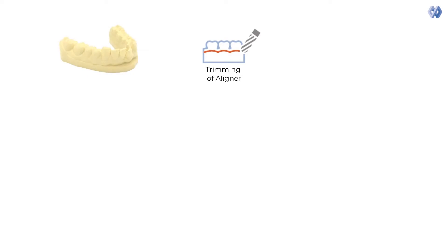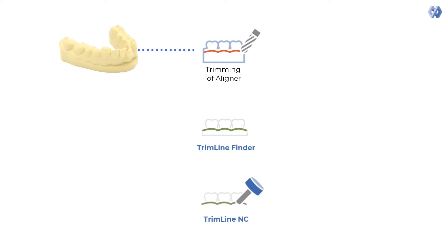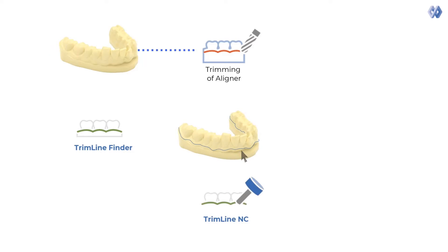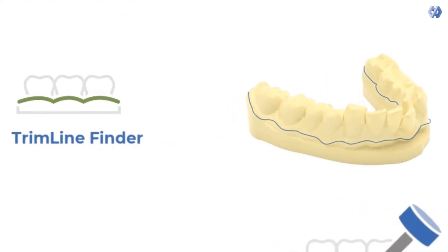ModuleWorks Digital Dentistry provides a complete solution to fully automate clear aligner trimming. ModuleWorks Trimline Finder eliminates manual labor by automatically deciding where the best trim line should appear. This means the lines must no longer be manually drawn, saving precious minutes in the process of each patient order.